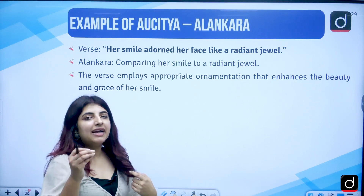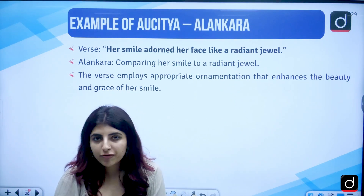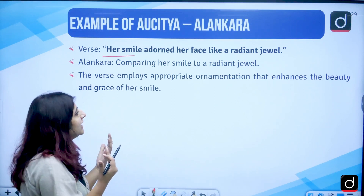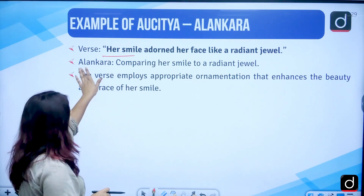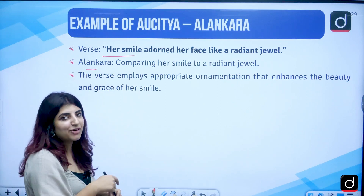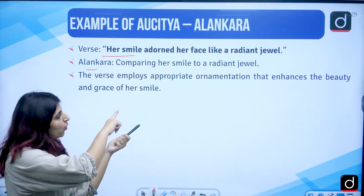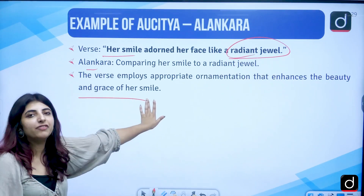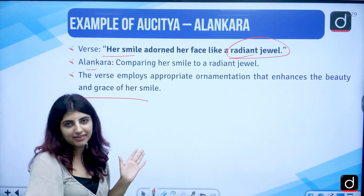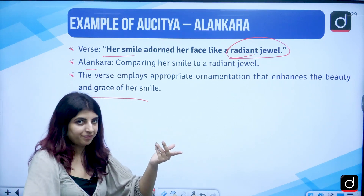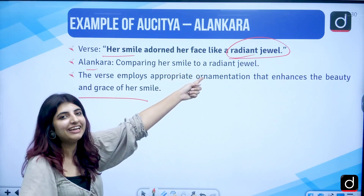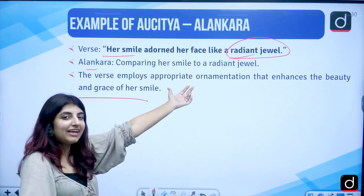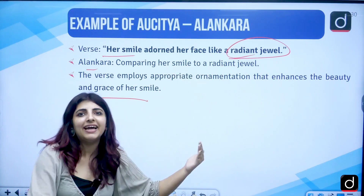Then we have the example of Alankara — the decorativeness, the ornamentation of poetry to enhance its aesthetic experience. Example: 'Her smile adorned her face like a radiant jewel.' Comparing her smile to a radiant jewel is one example of Alankara — it employs appropriate ornamentation. We didn't just say her smile was beautiful; we used the word 'like' — a simile — to enhance the beauty of her smile, showing it radiates like a jewel.